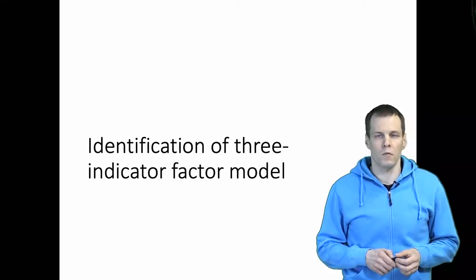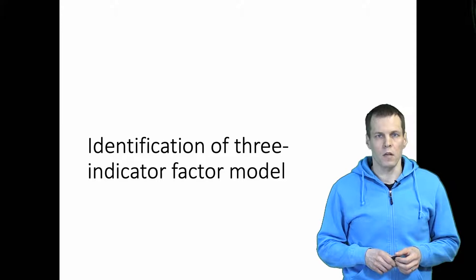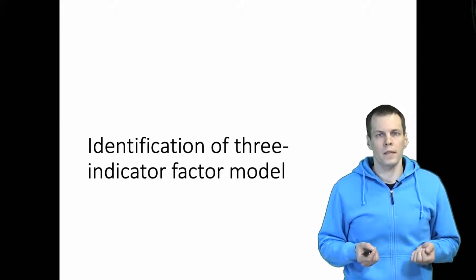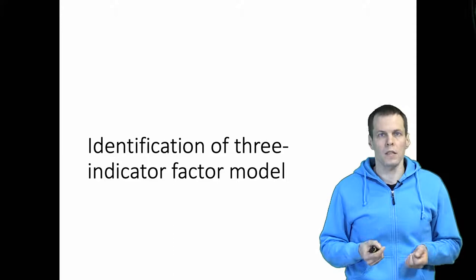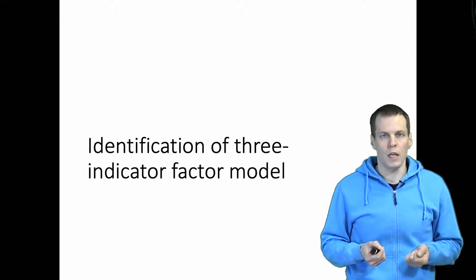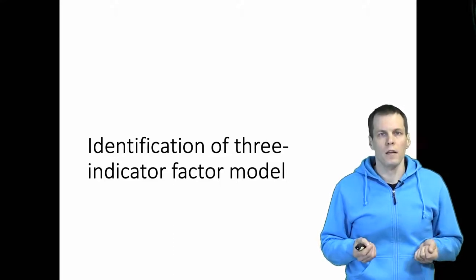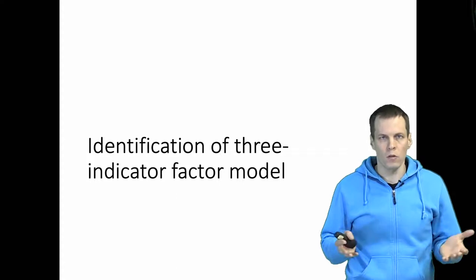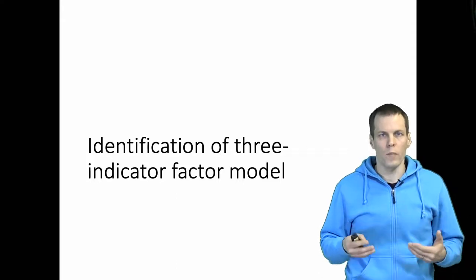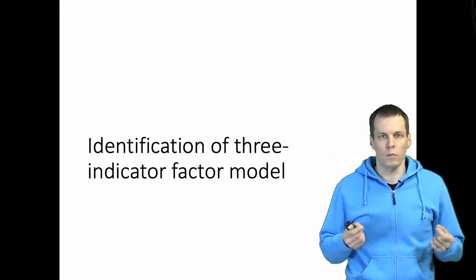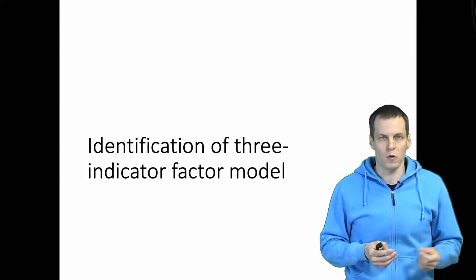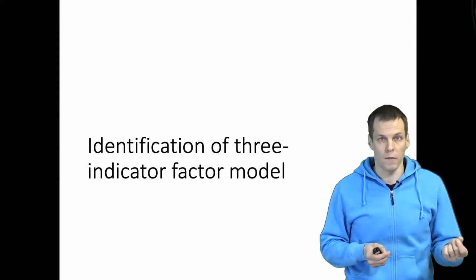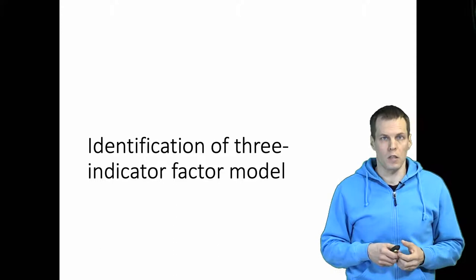Checking the identification of your model is an important thing to do before estimation. Identification basically means that there exists a single best solution to the model. If a model is not identified, it means that we cannot know based on the data what the optimal parameter values are, so we can't say anything about the parameter values, or at least some of them, unless the model is fully identified.